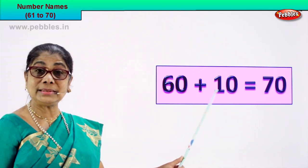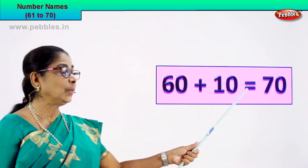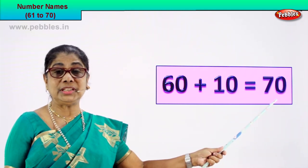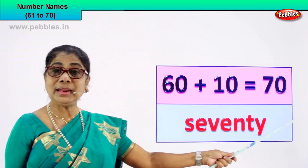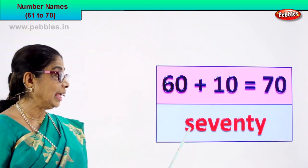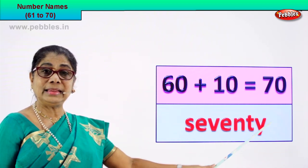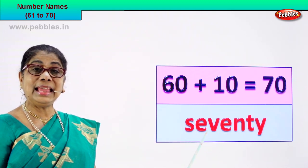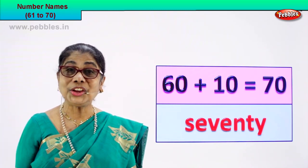60 plus 10 is equal to 70. 7 and 0, 70. That's the numeral. 70 — how do we write the name of this numeral? S-E-V-E-N-T-Y. 70 is the numeral and its name is S-E-V-E-N-T-Y, seventy. Good!